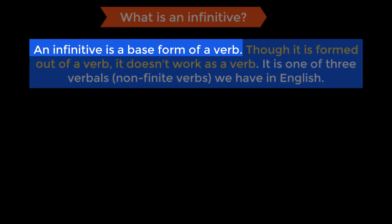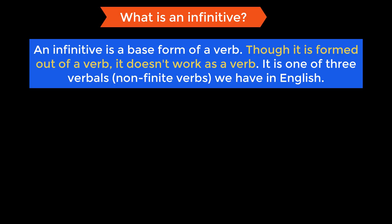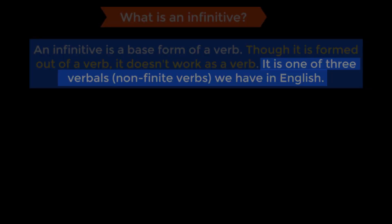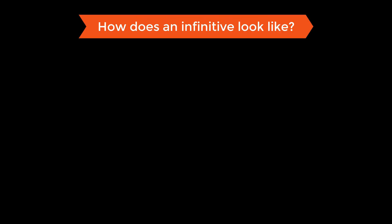An infinitive in English is nothing but the base form of a verb. It looks like a verb and is made out of a verb, but it does not act as a verb. Since it does not work as a verb, it is called a non-finite verb. It is one of the three non-finite verbs, or verbals, in English.